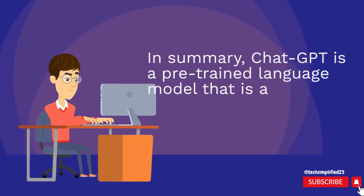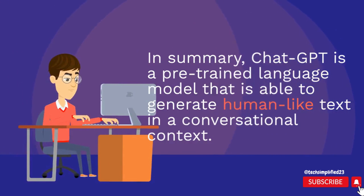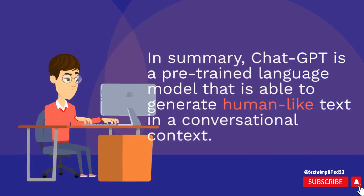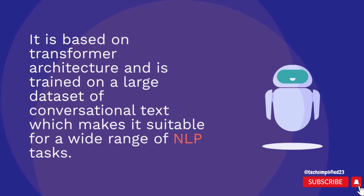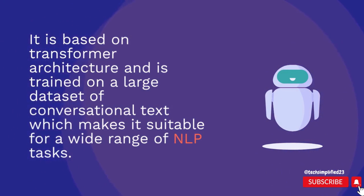In summary, ChatGPT is a pre-trained language model that is able to generate human-like text in a conversational context. It is based on transformer architecture and is trained on a large dataset of conversational text, which makes it suitable for a wide range of NLP tasks.